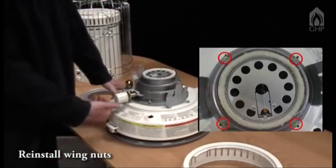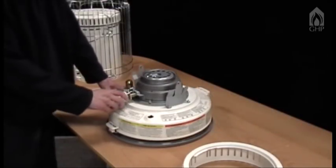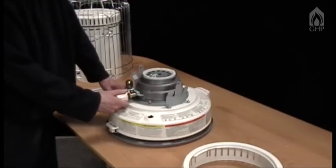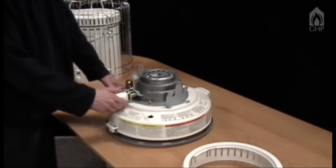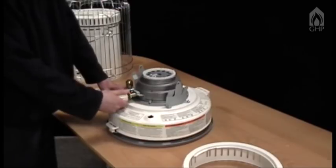Trip the automatic shutoff system by nudging the pendulum. Raise the wick by turning the wick adjuster knob. Trip it again to make certain it is operating correctly.